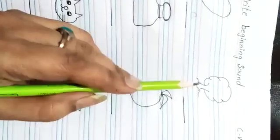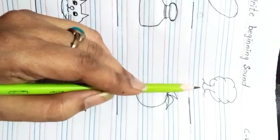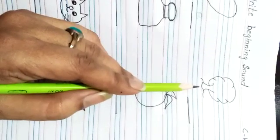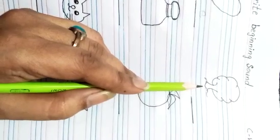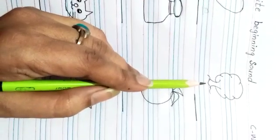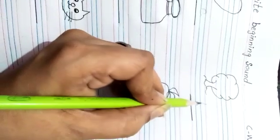Okay, now come to next picture. Tree. Which picture is this? Tree. And what is the beginning sound of tree? Tree. Tree. Tree. Konsa sound are right? Yes. Tree. T. Tree. Okay, we will write T in the blank.